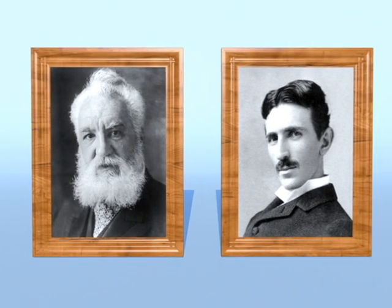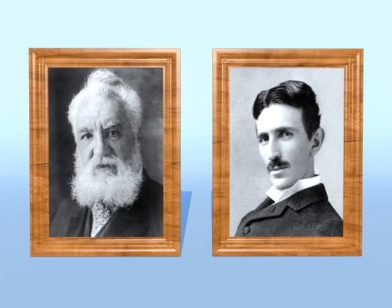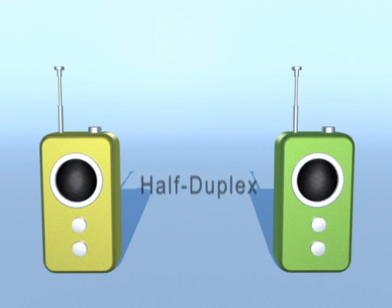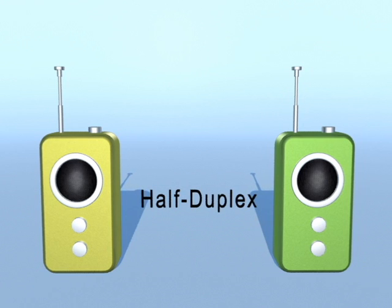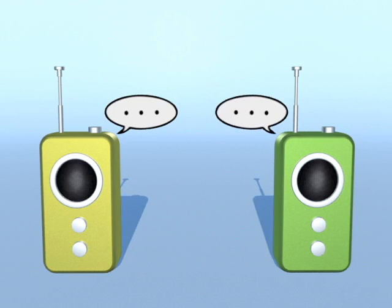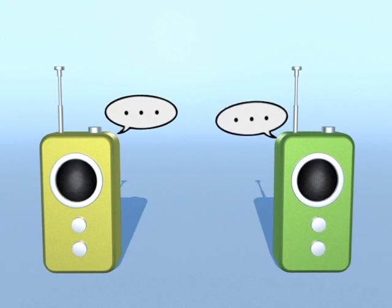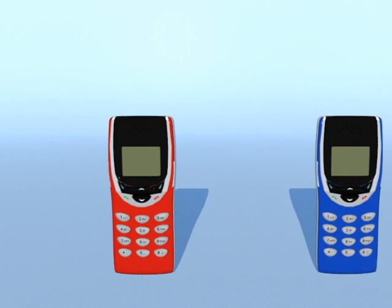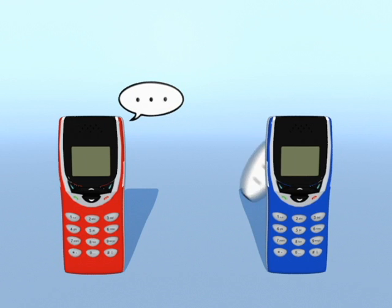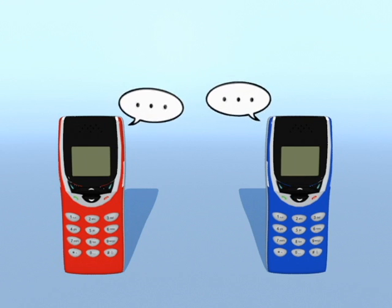To understand the sophistication of the cell phone, let's compare it to the walkie-talkie. Walkie-talkies are half-duplex devices — that's when two people communicating use the same frequency, so only one person can talk at a time. A cell phone is a full-duplex device, meaning you can use one frequency for talking and a second frequency for listening, so both people can talk on the call at once.